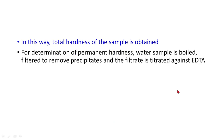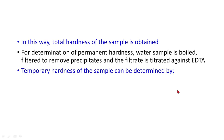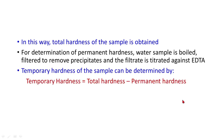For the determination of permanent hardness, the water sample is boiled, filtered to remove precipitates, and the filtrate is titrated against EDTA. Temporary hardness of the sample can be determined by the relationship: temporary hardness is equal to total hardness minus permanent hardness.